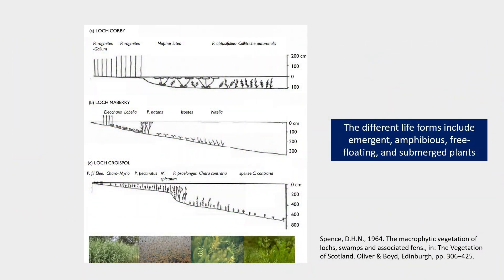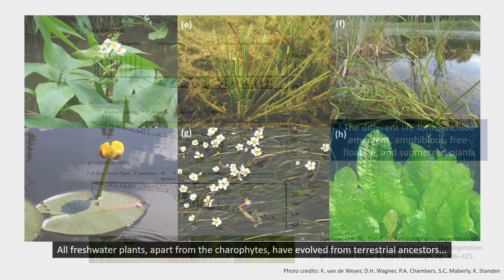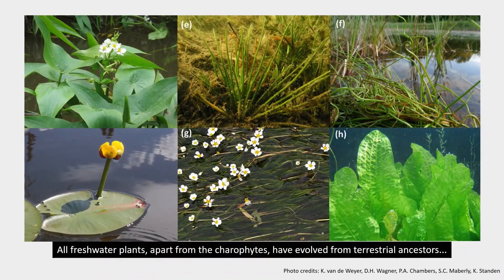The different life forms include emergent, amphibious, free-floating, and submerged plants. All freshwater plants, apart from the carophytes, have evolved from terrestrial ancestors and include around 5,000 species spread over more than 800 genera and 200 families.